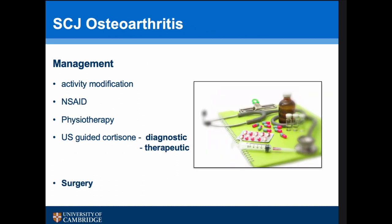The management of SCJ osteoarthritis: the vast majority of people will have their symptoms settle with a combination of activity modification and non-steroidal anti-inflammatories. Sometimes physiotherapy, particularly helping with scapulothoracic function, is useful. I like to use an ultrasound-guided cortisone injection for patients with continued problems, partly as a diagnostic and partly as a therapeutic procedure, and in many people this actually settles their symptoms.